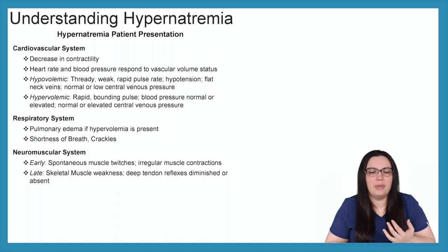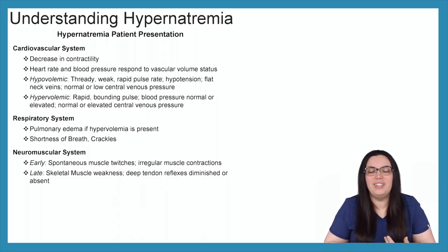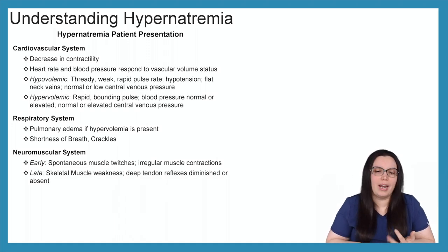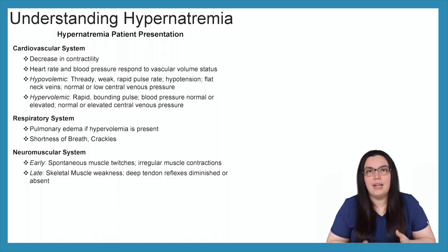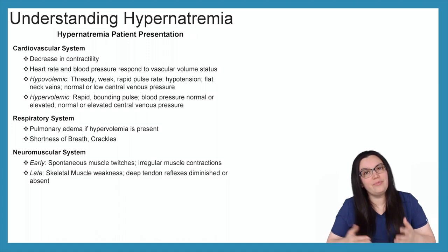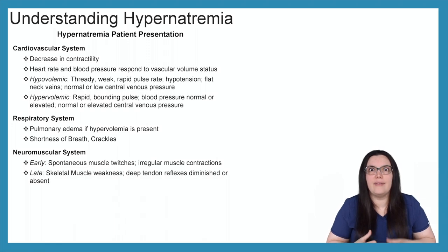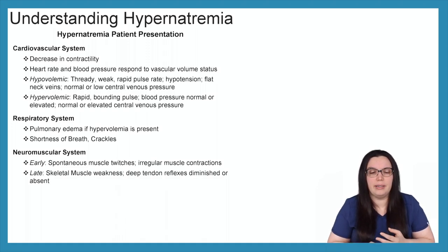With our hypernatremic patients, when it comes to the cardiovascular system, we're going to have a decrease in contractility. The heart rate and blood pressure respond to vascular volume status. If we have a hypovolemic patient without enough fluid, we'll see thready, weak, rapid pulse rates and hypotension with flat neck veins, and normal or low central venous pressure. If the patient is hypervolemic, we'll have rapid bounding pulses, blood pressure that's normal or elevated, and normal or elevated central venous pressures.